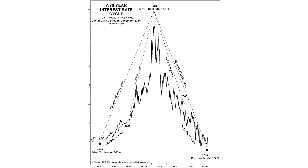So back to the question we began with: what could follow the end of the 70-year rate cycle? The answer may come by looking at the years before this long cycle began. From 1929, that meant 17 years of crisis — with deflation, the Great Depression, and World War II. Obviously these are early days yet, but if the symmetry holds, it suggests that the time to come could include years of crisis, deflation, depression, and possible world war. Again, these are early days — do stay tuned.